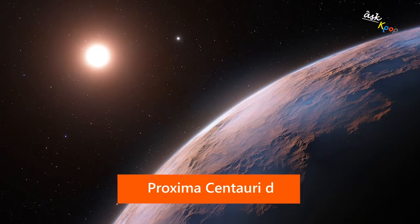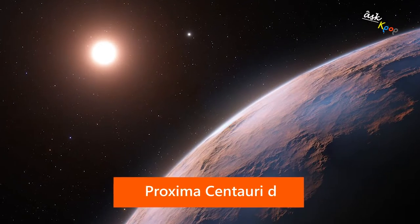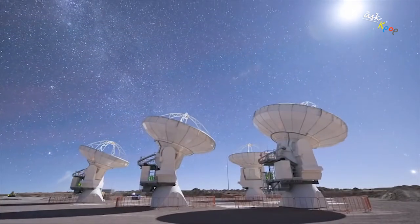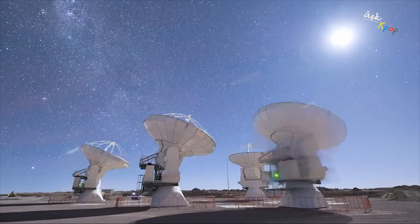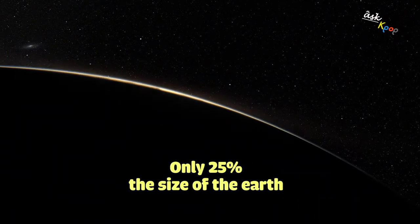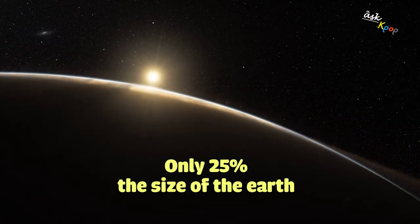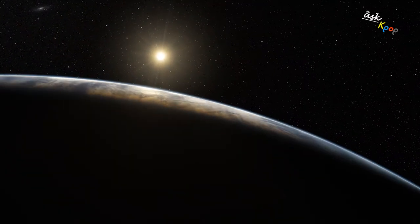The new planet, named Proxima d, discovered by the European Southern Observatory's Very Large Telescope in Chile, is only 25% the size of Earth, making it one of the lightest exoplanets known.